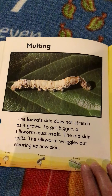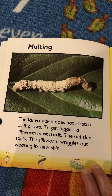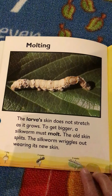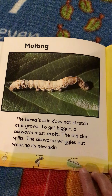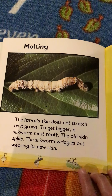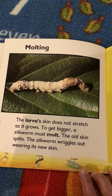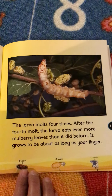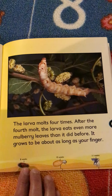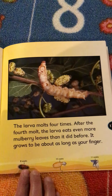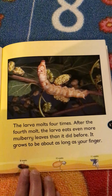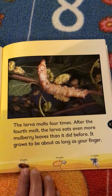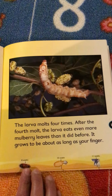Molting. The larva skin does not stretch as it grows. To get bigger, a silkworm must molt. The old skin splits and the silkworm wiggles out wearing its new skin. The larva molts four times. After the fourth molt, the larva eats even more mulberry leaves than before and grows to be about as long as your finger.